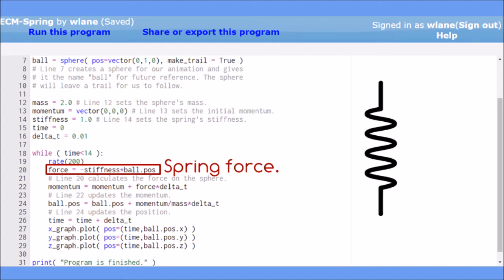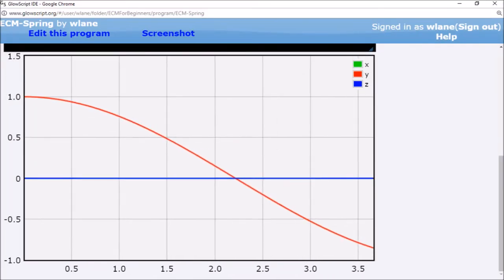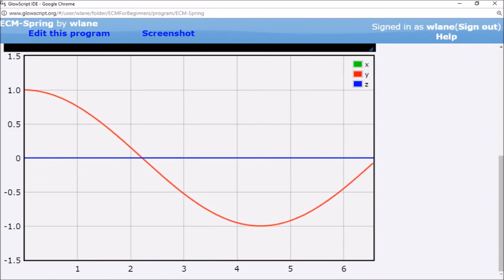Now, we know how springs behave. They oscillate back and forth. So, when we run the code, we should see some sort of oscillatory behavior. And that's exactly what we get, a cosine curve.